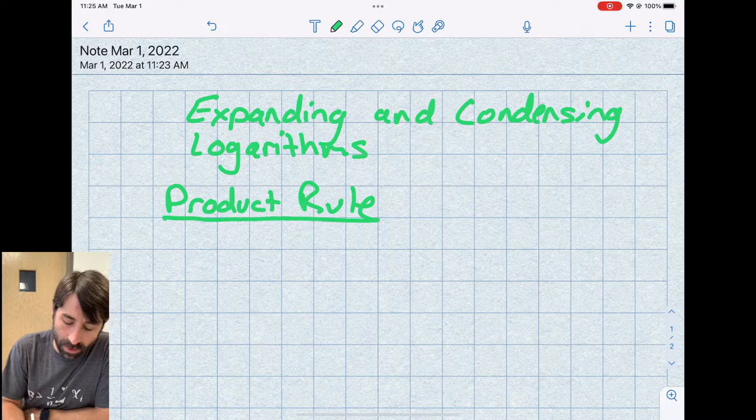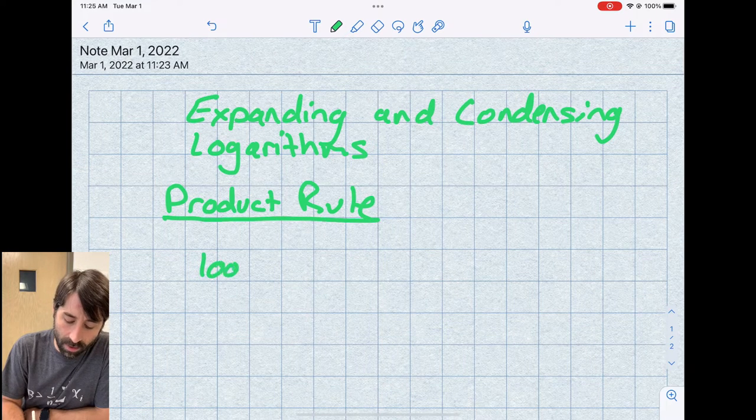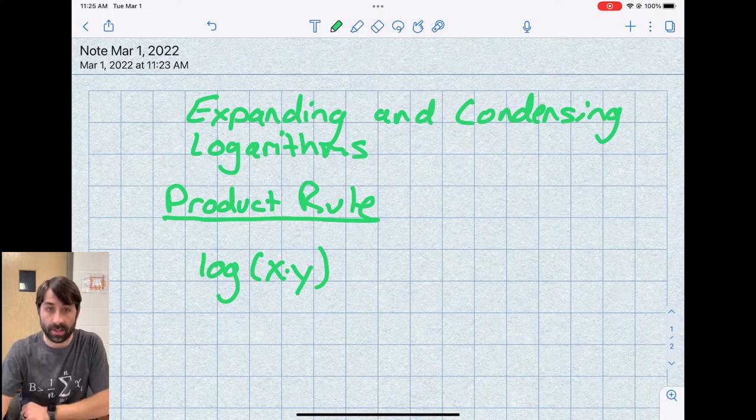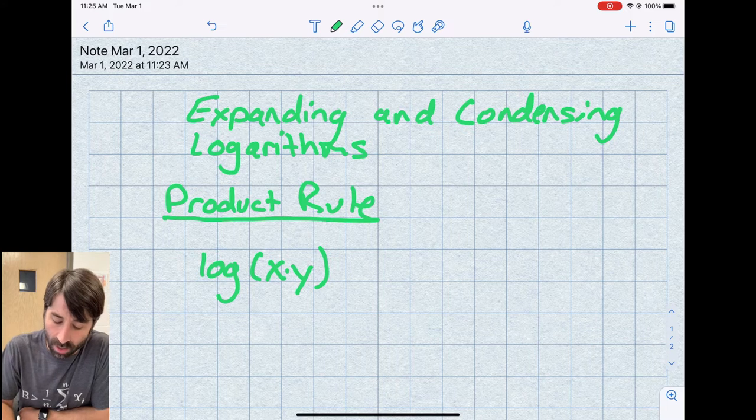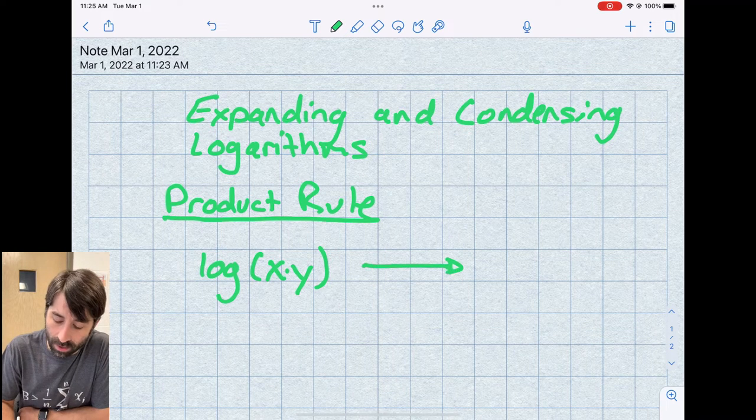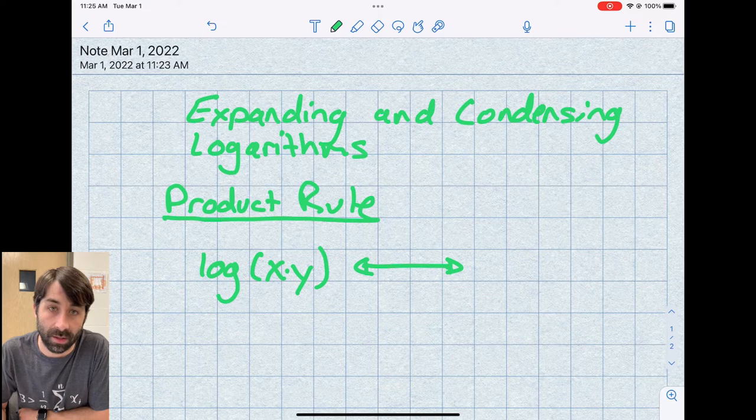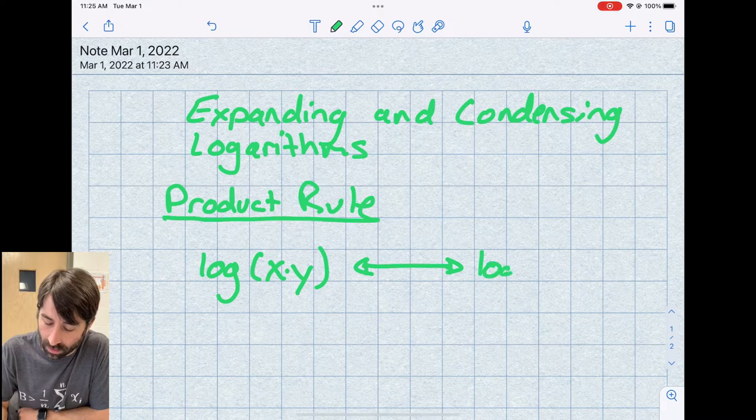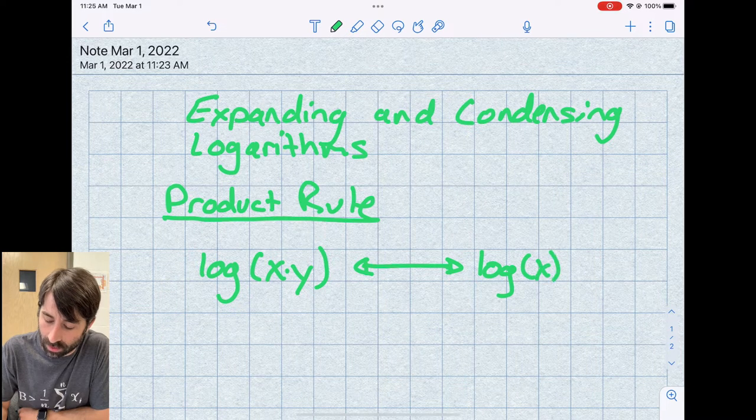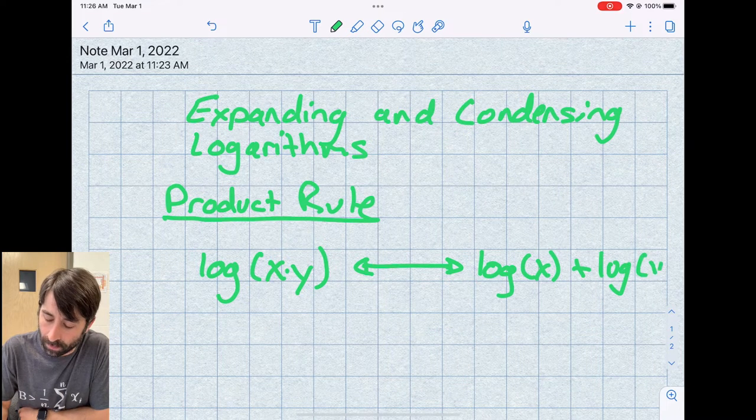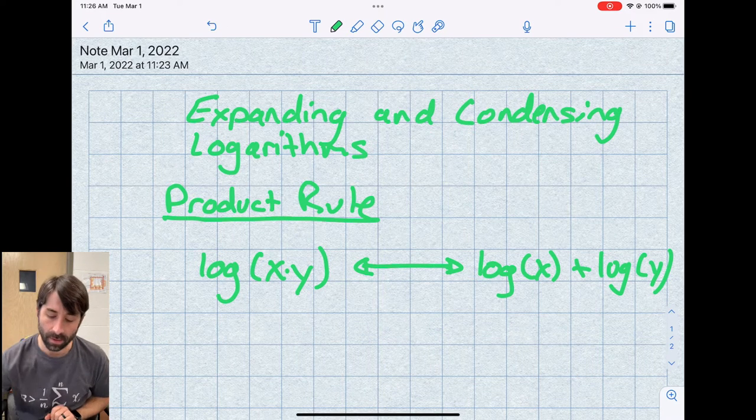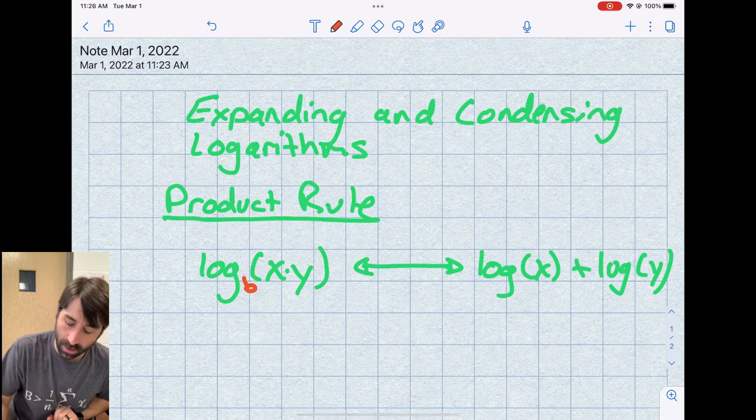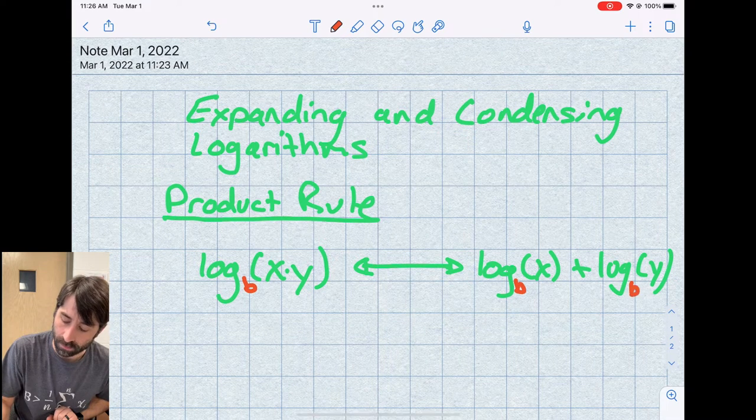The product rule states that if we have the logarithm of a product, so let's say the log of x times y, to keep this in general terms, we can expand that to be the sum of the logs of the factors. So what that looks like is this can turn into log of x plus log of y. Now the bases doesn't matter. We can use any base as long as the bases are the same.